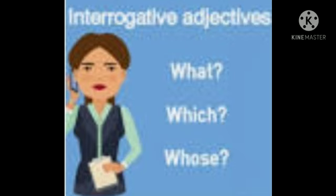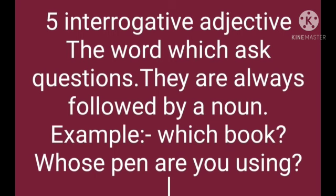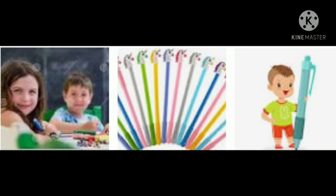Interrogative adjectives — what, which, and whose — when used with nouns to ask questions are called interrogative adjectives. They are always followed by a noun. For example: Which book? Whose pen are you using? Which and whose are interrogative adjectives here.